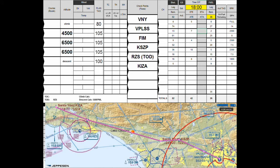We're looking at a VFR flight plan form, and on the lower edge of the screen you see a route from Van Nuys over towards Santa Susana Pass, then Fillmore VOR, Santa Paula Airport, and we have a flyby waypoint, Lake Casitas.